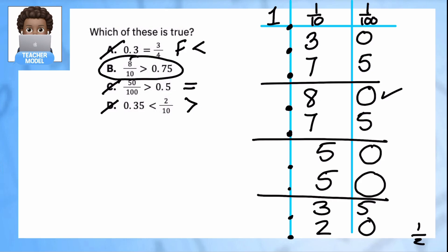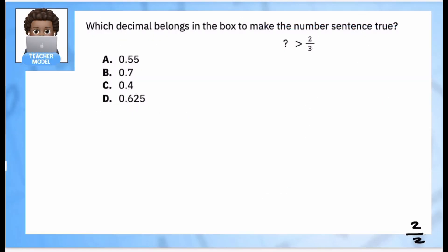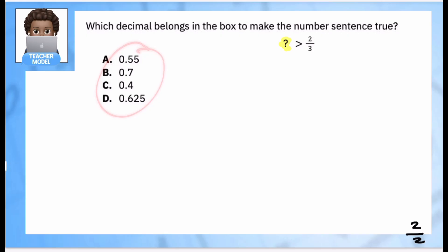Hit pause and add this to your notes. For the last example, we want to compare which values are greater than 2/3. I have a fraction with a denominator that doesn't end in 10 or 100, so it's much easier to change just this one number to a decimal rather than converting all the other values to fractions — especially since all the other values already end in 10 or 100.